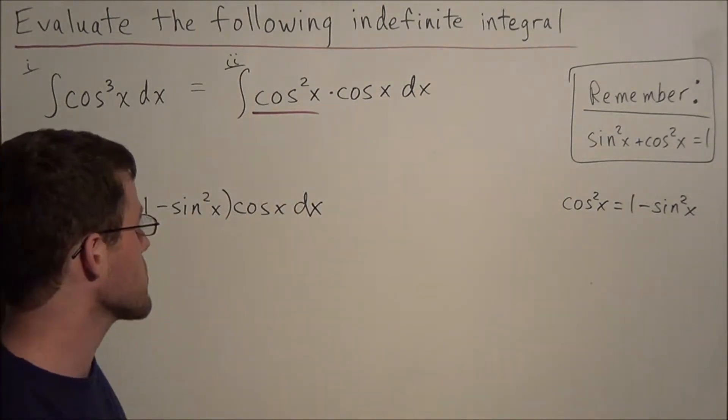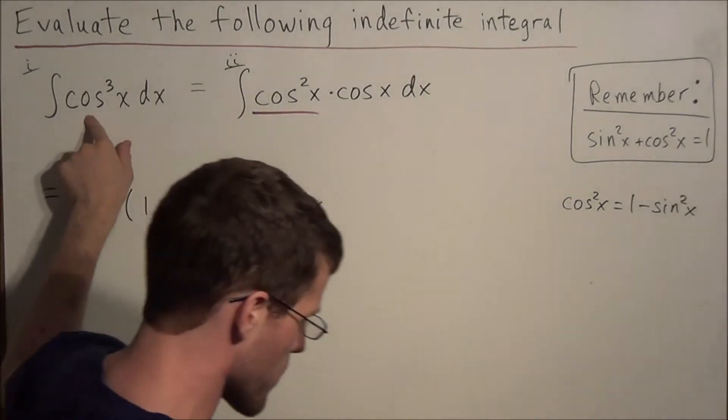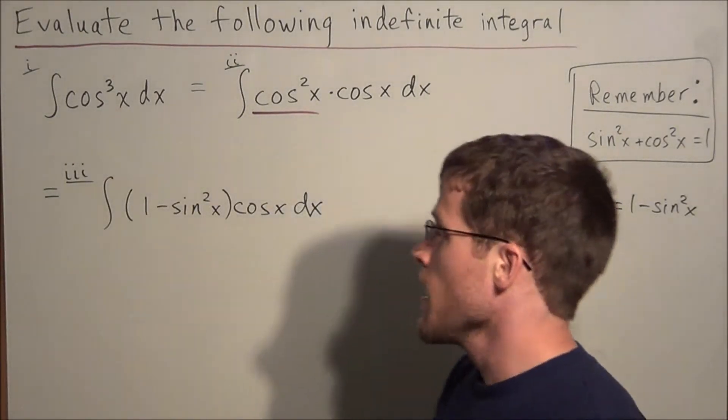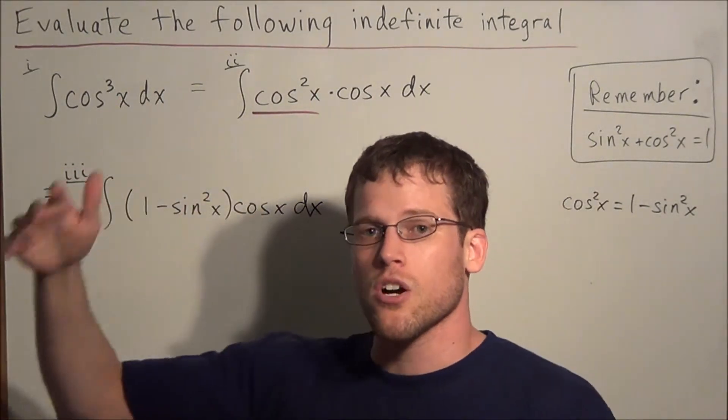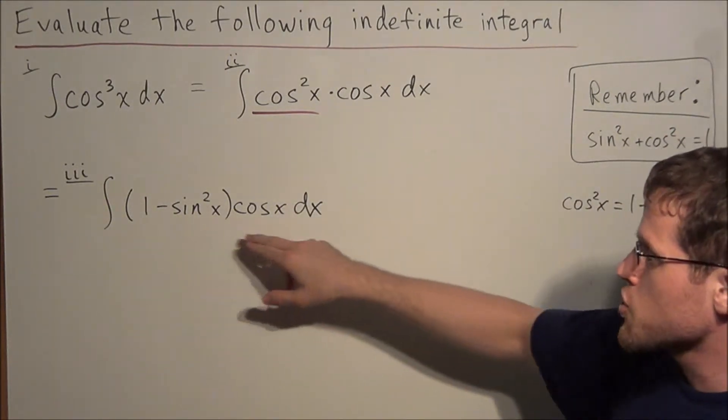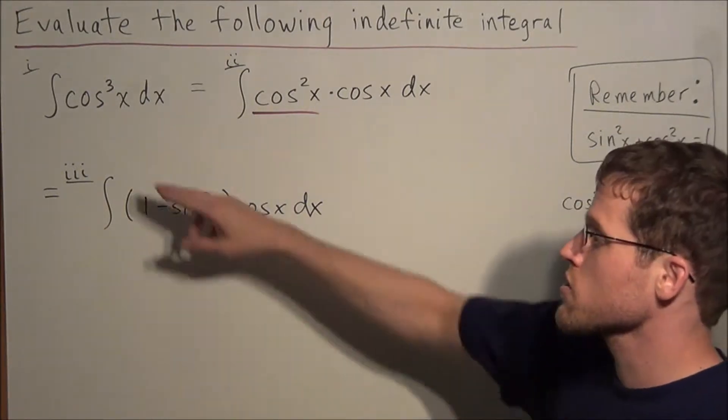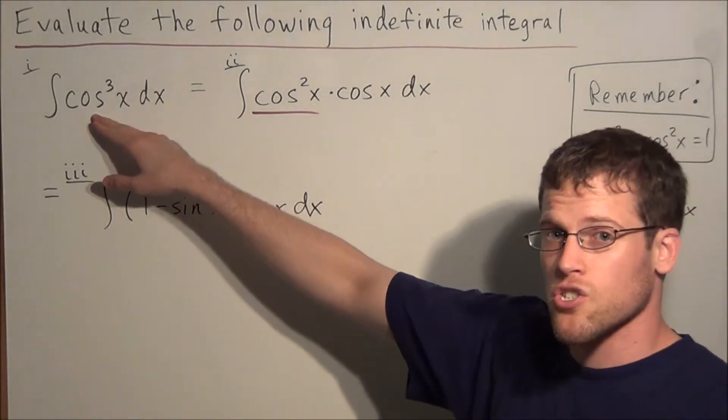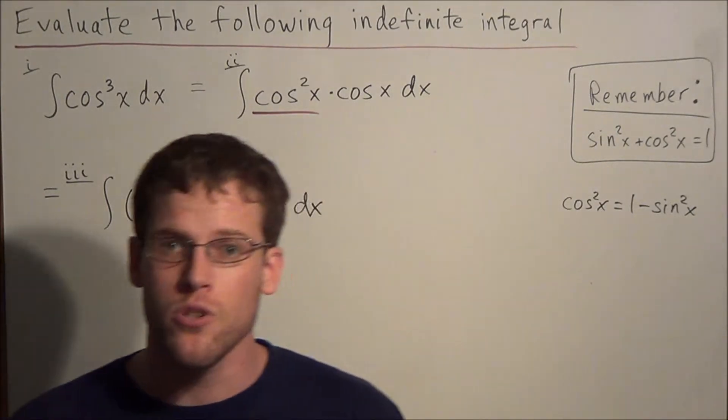Now the reason why we do this is because if we're dealing with only one trig function, in this case cosine, and it's a large power, in this case the power is 3, when we're dealing with large powers of a single trig function, we want to generate another trig function other than the one we started with. So notice in the beginning we had cosine, just cosine, but now we have sine and cosine. This allows us to make a u substitution.